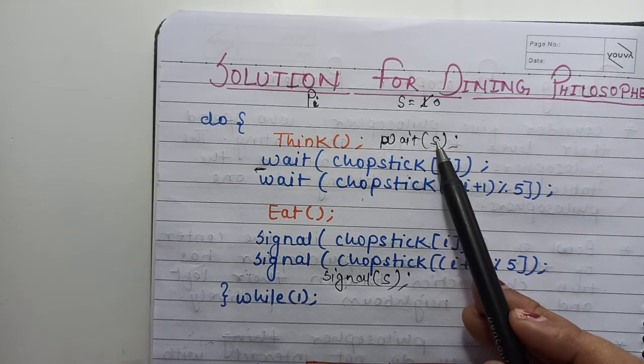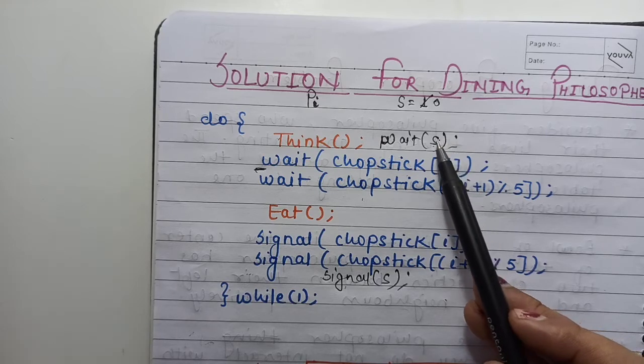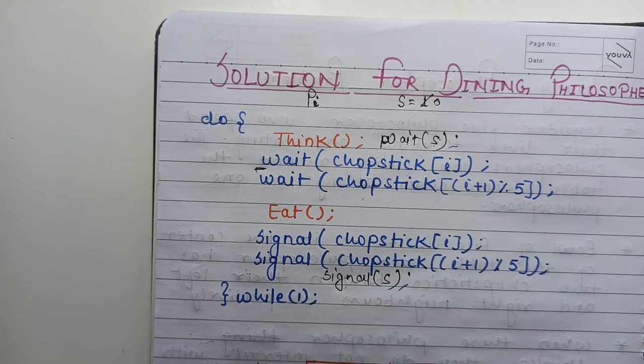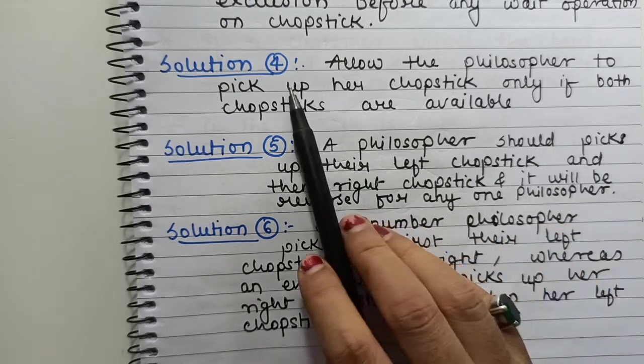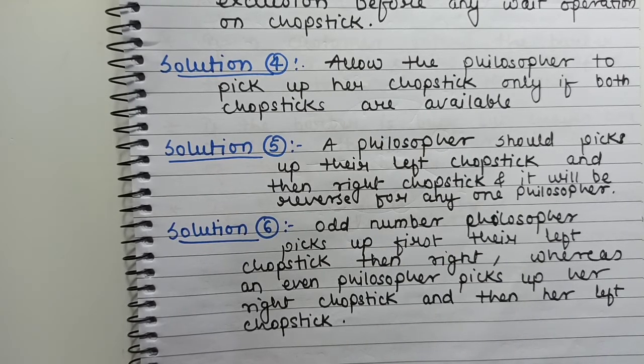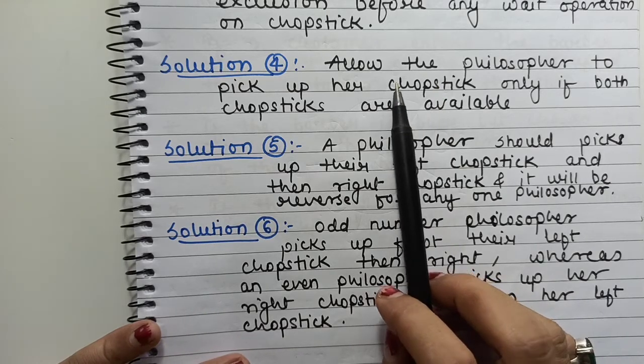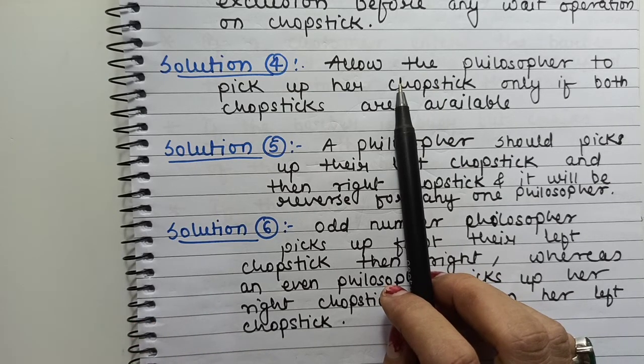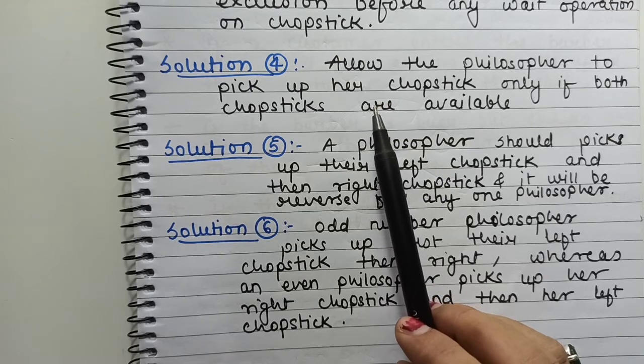Do we have any other solution without increasing resources, without decreasing processes, and without having extra semaphores? Solution 4: allow the philosopher to pick up her chopstick only if both chopsticks are available. First, check if both chopsticks are available. If yes, then allow the philosopher to perform wait operation. If even one is not available, meaning someone else is holding it, this can be the solution. But it can give starvation to some of the philosophers. If waiting time increases, that philosopher may starve.